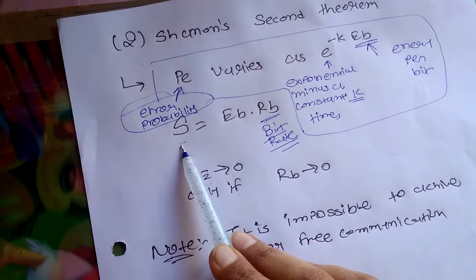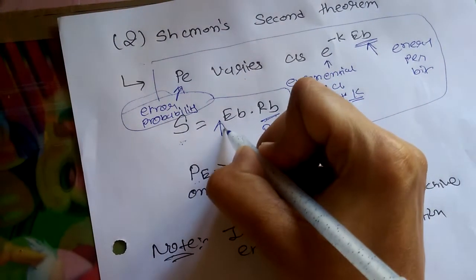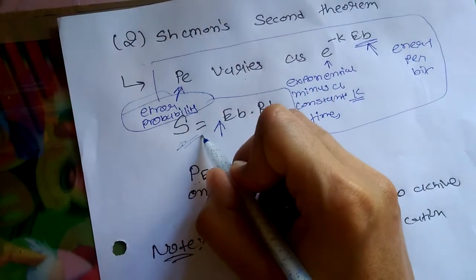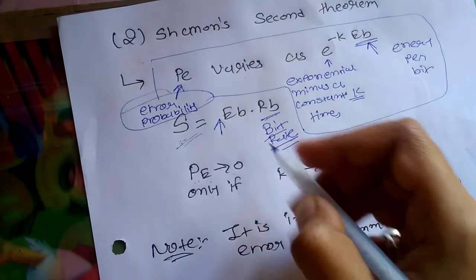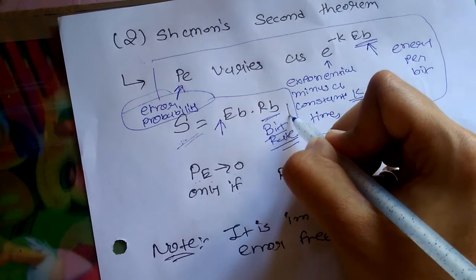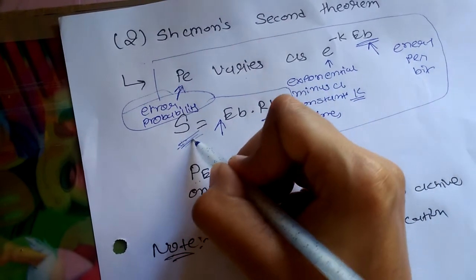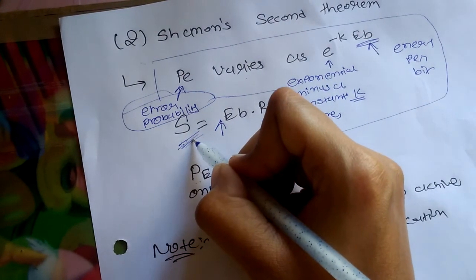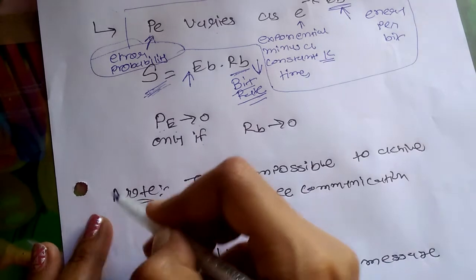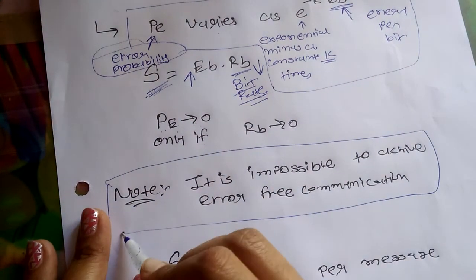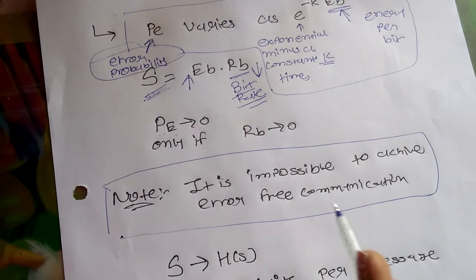When the error probability Pe is zero, only if Rb approaches zero. This is an important term. In Shannon's second theorem, signal is present — it means increasing Eb, the signal power S, for a given bit rate, or decreasing the bit rate Rb for a given signal power, or both. This is a very important note in Shannon's theorem: it is impossible to achieve error-free communication.